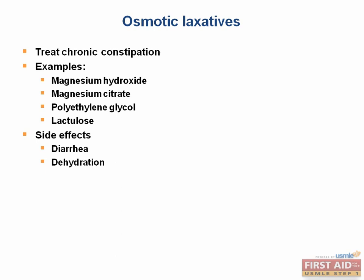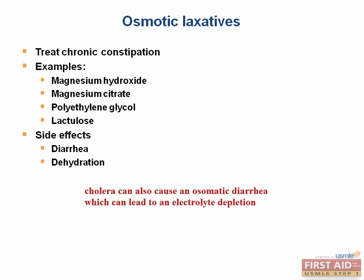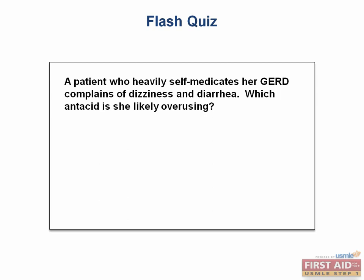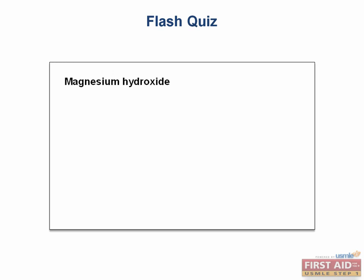Can you think of a GI microbe that causes a similar situation? That's right — cholera can also cause an osmotic diarrhea, which can lead to electrolyte depletion. Flash quiz: a patient who heavily self-medicates her GERD complains of dizziness and diarrhea. Which antacid is she likely overusing? That's right — it's magnesium hydroxide. One way to help you remember this is that M and G can help you think 'must go,' hence magnesium hydroxide can cause diarrhea.